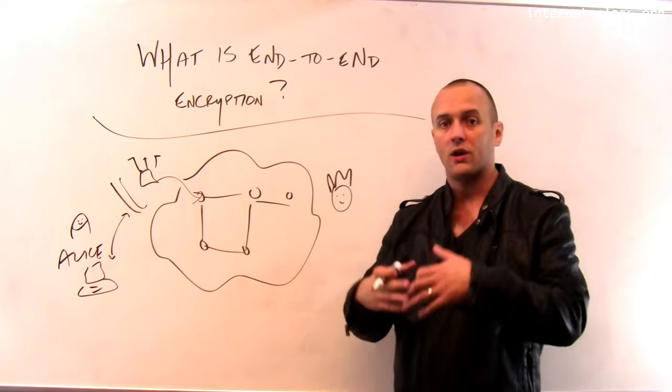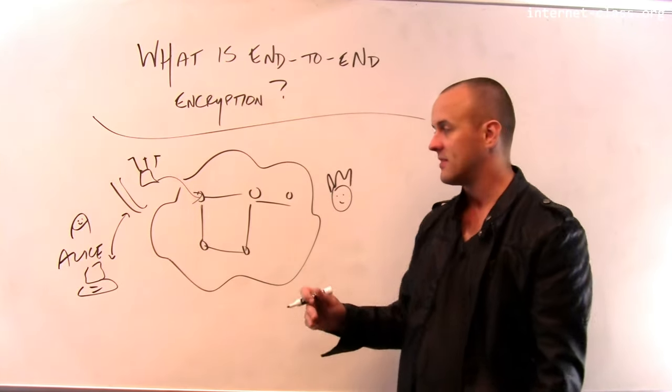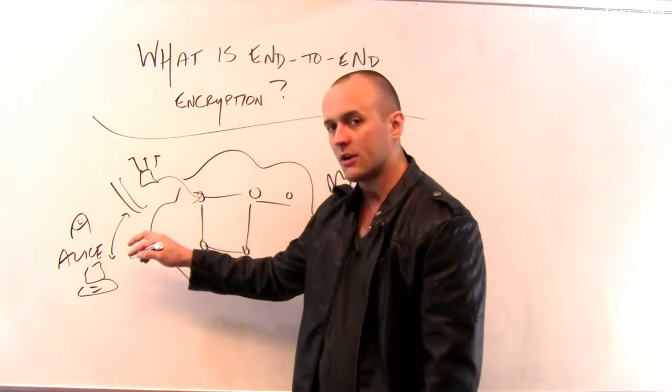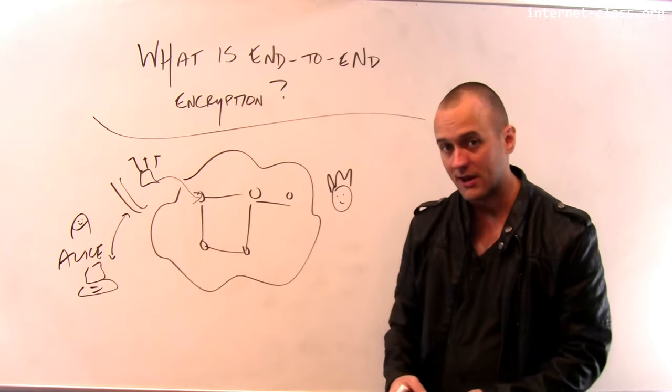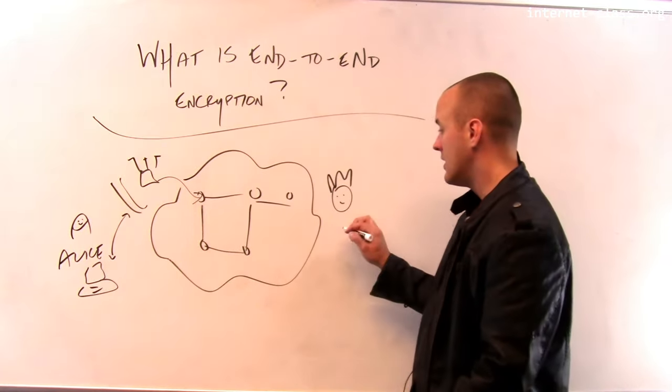They want to store it, want to mine it for various pieces of data. And so just because you're using an encrypted link with your router doesn't mean that the traffic is encrypted all the way to Bob.